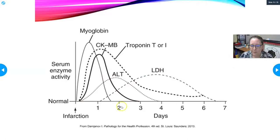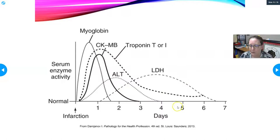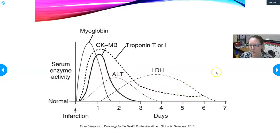If the patient has a second heart attack while still in the hospital — say four to six days later — myoglobin and CK-MB can be useful because they've already cleared and gone negative. If they start rising again, we can diagnose a reinfarction. Troponin would eventually tick back up too, but myoglobin and CK-MB allow you to detect the reinfarction faster since troponin from the first event may still be elevated.